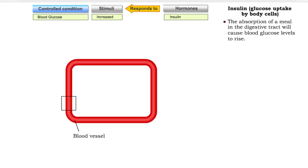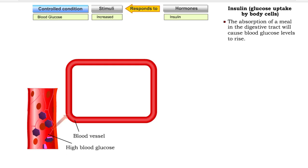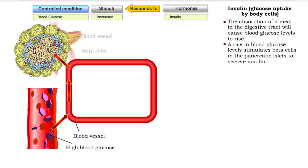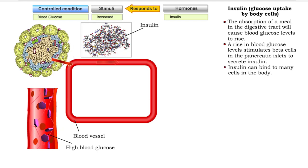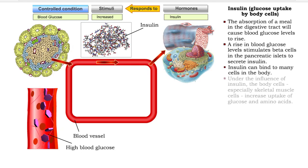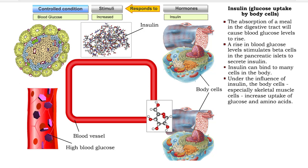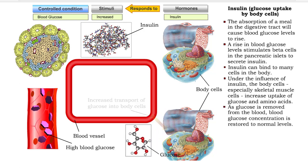Certain situations, such as the absorption of a meal in the digestive tract, will cause blood glucose levels to rise. A rise in blood glucose levels stimulates beta cells in the pancreatic islets to secrete insulin. Insulin can bind to many cells in the body. Under the influence of insulin, the body cells increase uptake of glucose and amino acids. As glucose is removed from the blood, blood glucose concentration is restored to normal levels.